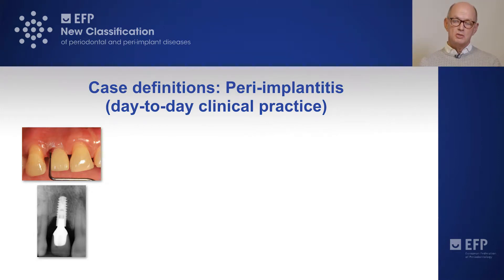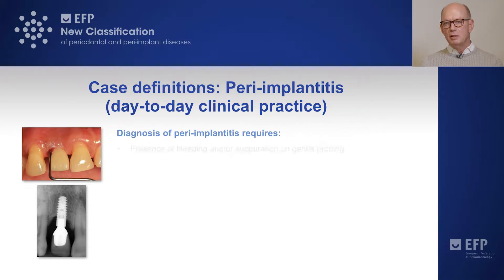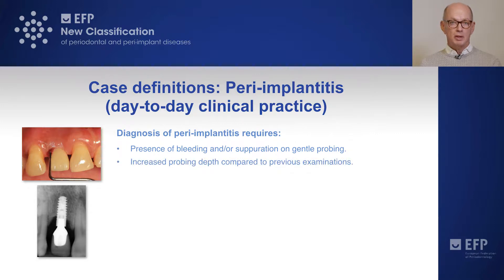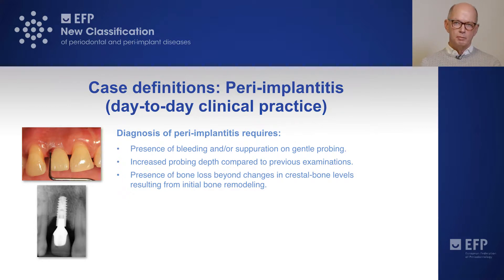The case definitions on peri-implantitis are important, and the recommendations for day-to-day clinical practice are as follows. The first part relates to bleeding or suppuration on probing. The second is to observe increased probing depths compared to previous examinations. Number three, there should be bone loss going beyond the changes in crestal bone levels resulting from initial bone remodeling.